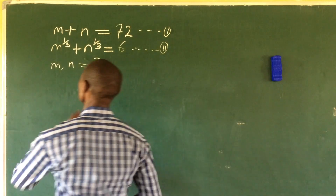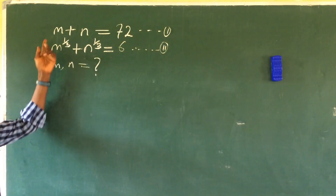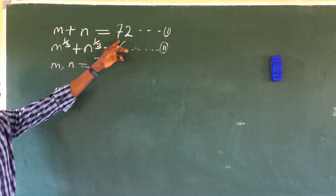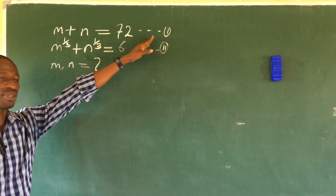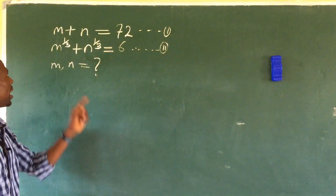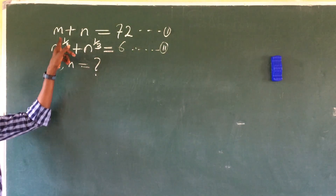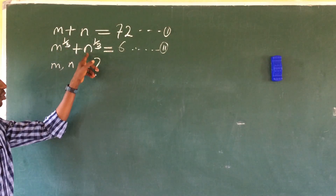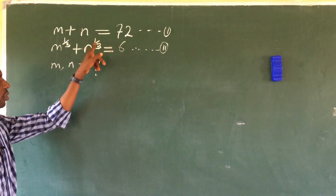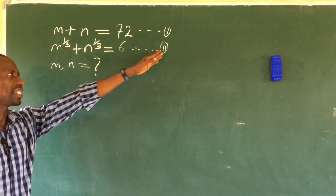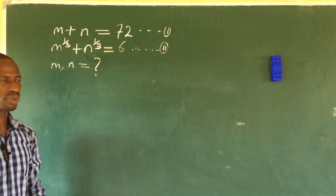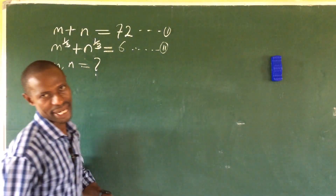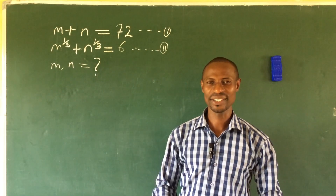Without much waste of time, let's go into today's business. The question reads: m + n = 72 (equation one), and m^(1/3) + n^(1/3) = 6 (equation two). What would be the values of m and n?